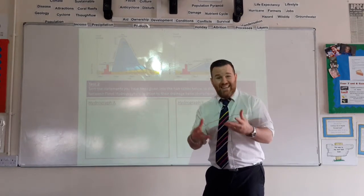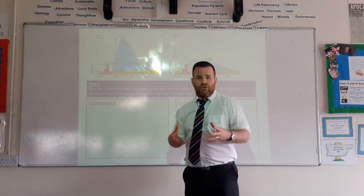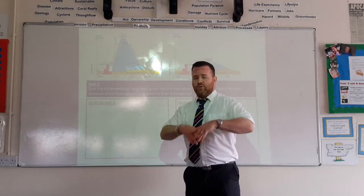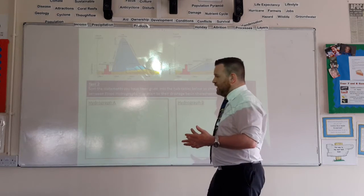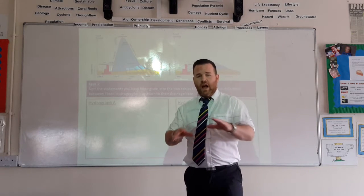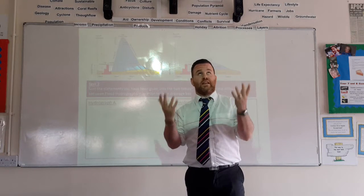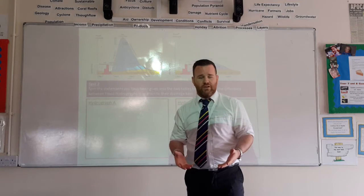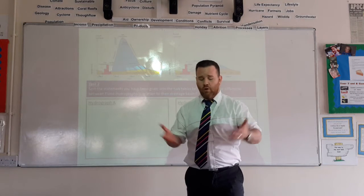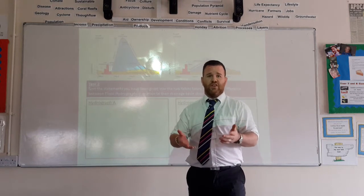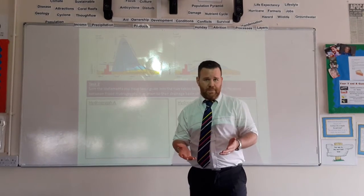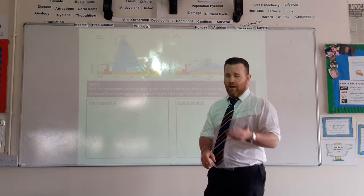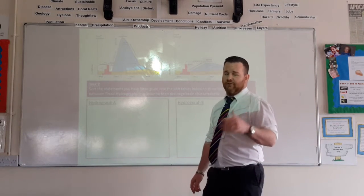Vegetation: when there is vegetation, you reduce the risk of flooding. If you cut down trees — which would be a human cause of flooding — then you take away the idea of interception. There is nothing to catch the rainwater or stop it from reaching the ground. Therefore, more water reaches the ground, flows over the surface as surface runoff, and into the river. So we've got two physical causes: intense rainfall and snow melt. We've got one human so far: deforestation.